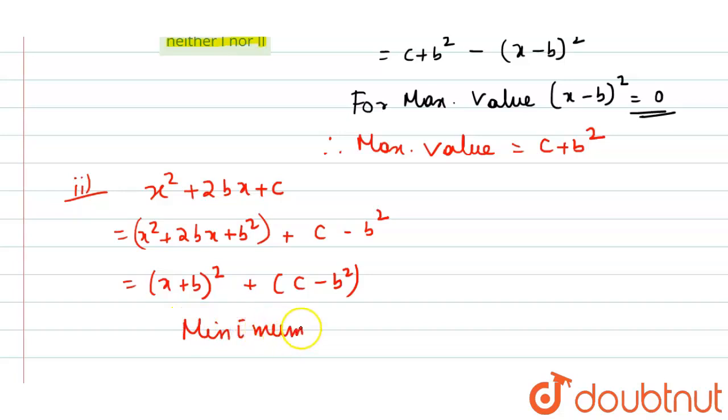For minimum value, (x + b)² equals 0. That means the minimum value equals c - b².